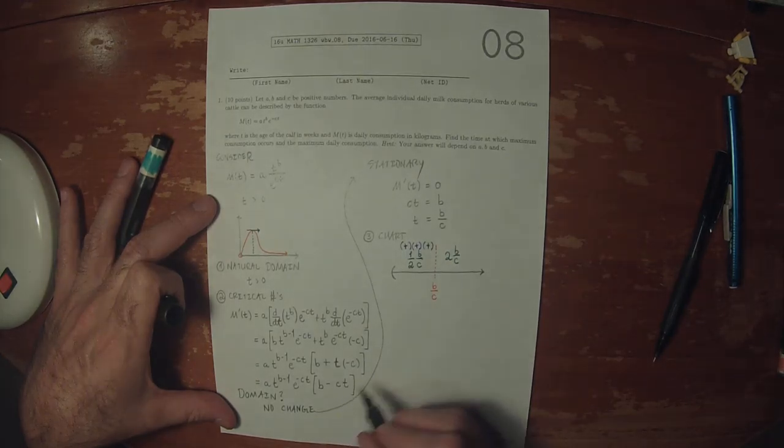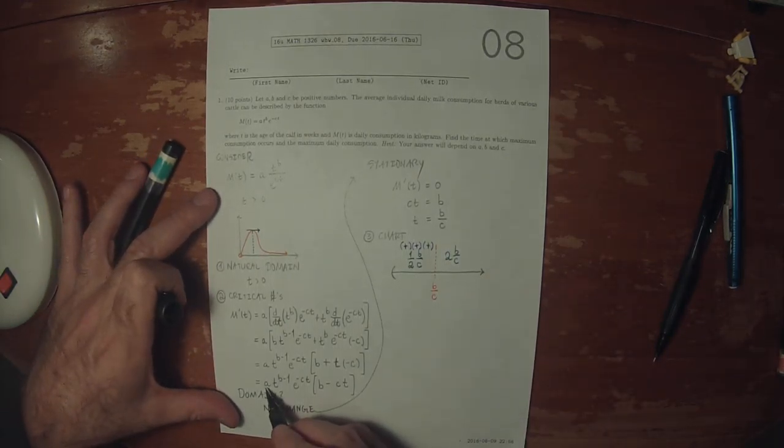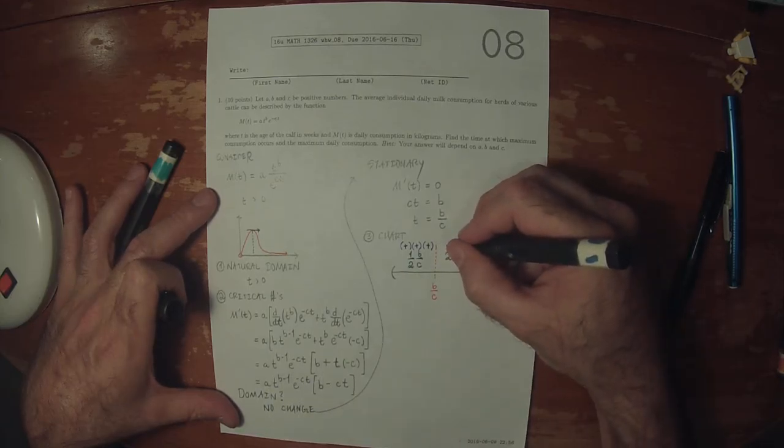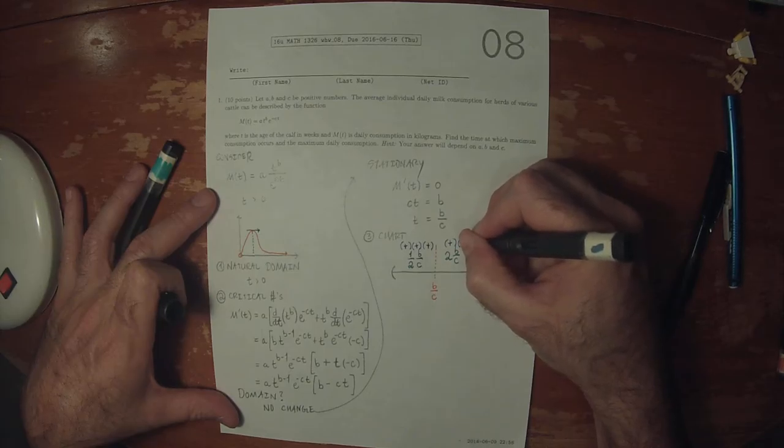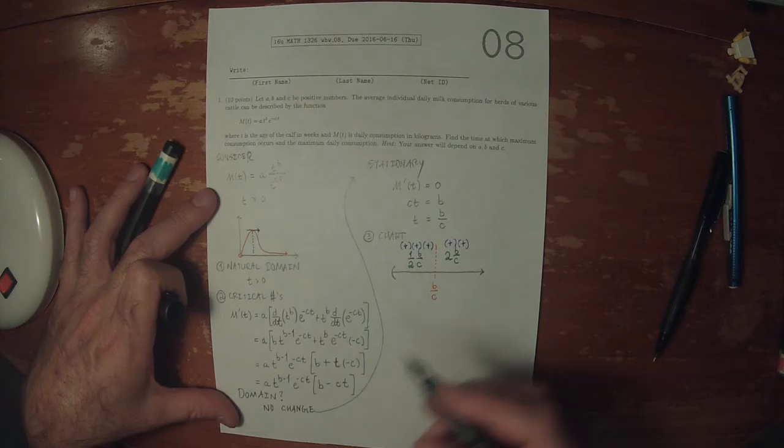And if we plug in twice B over C, then positive factor, positive factor. And this factor, if we plug in twice B over C, that would be B minus 2B. So B minus 2B is negative B, which is negative.